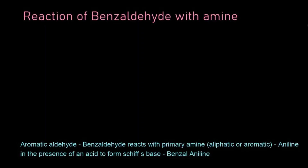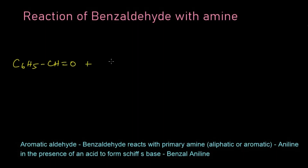In this video we are going to learn the reaction of benzaldehyde with an aromatic amine, that is aniline. Let's write the reaction: C6H5-CH=O — this is benzaldehyde — which reacts with aniline, that is NH2-C6H5.